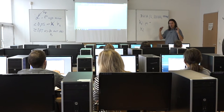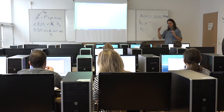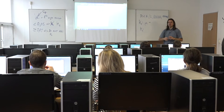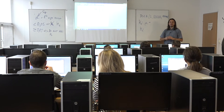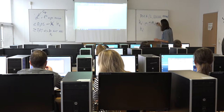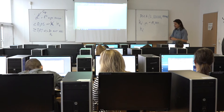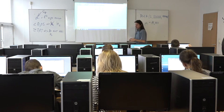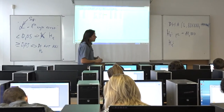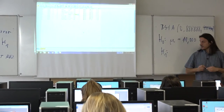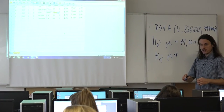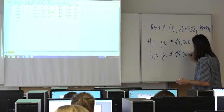So our null hypothesis is that average income in the Czech population 15 years ago was 11,000 Czech crowns. The alternative hypothesis — easy to guess — is that the average is some other value, not 11,000.